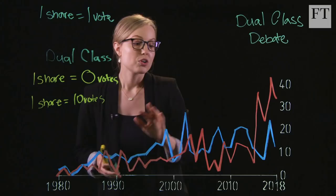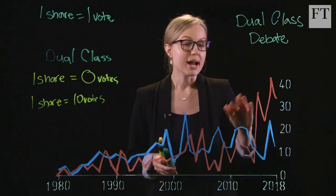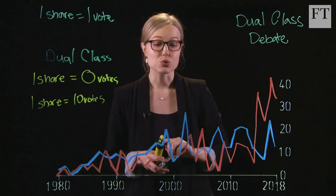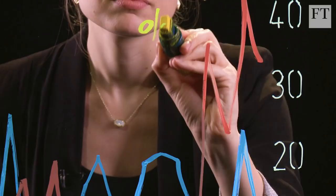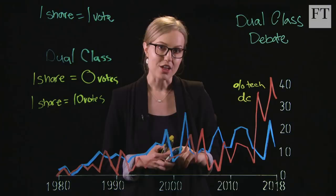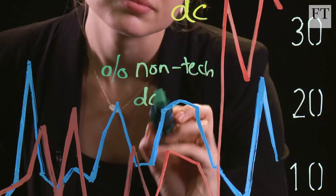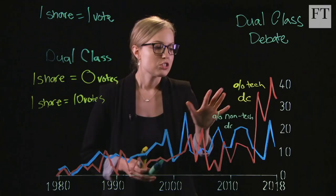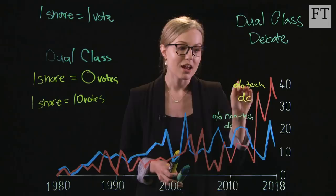Now, going to this chart. The red line represents the percentage of tech IPOs in a given year that have the dual class share system. And the blue line represents the percentage of IPOs in the non-tech sector that also have that dual class share system. So these two lines are showing the same thing — but one is for the tech sector and one is for the non-tech sector. This data was put together by Professor Jay Britter.